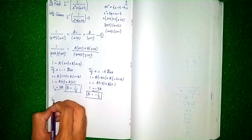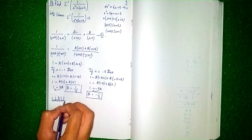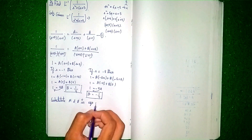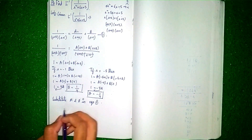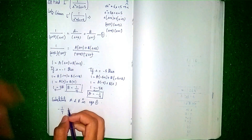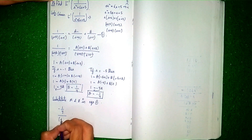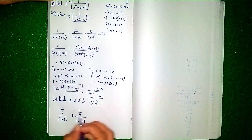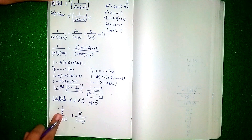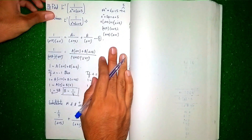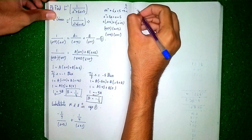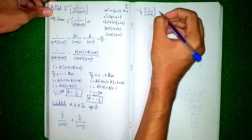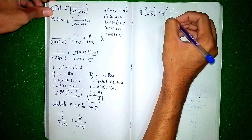Now substitute A = −1/4 and B = 1/4 back into the partial fraction expression. It becomes: (−1/4) · [1/(s + 5)] + (1/4) · [1/(s + 1)]. Taking the constants outside: −(1/4) · [1/(s + 5)] + (1/4) · [1/(s + 1)].